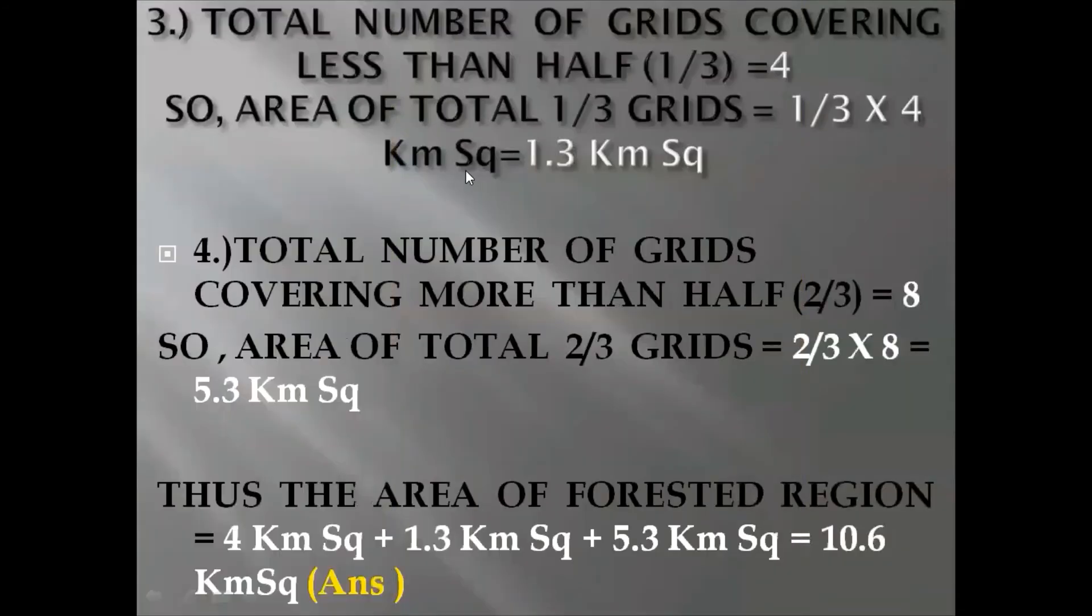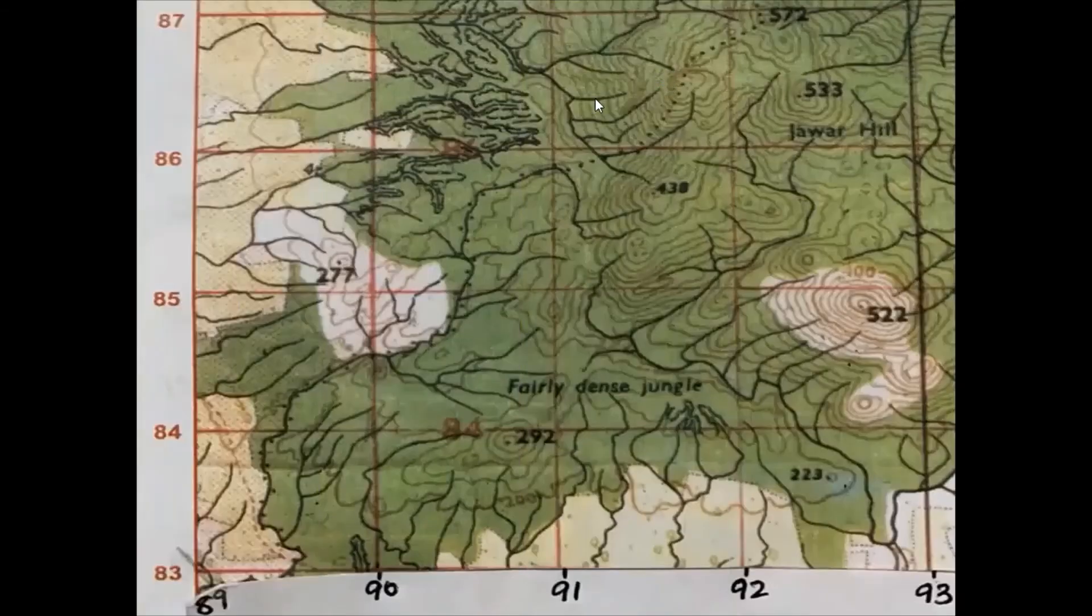The third step is I will count the total number of grids covering less than half. That is 1 by 3. Less than half this one, this grid 1, this another grid 2.